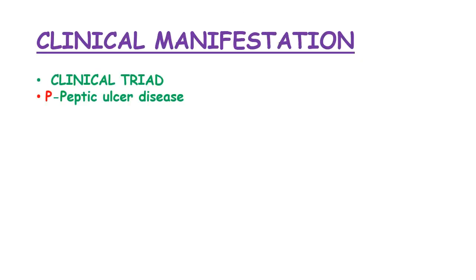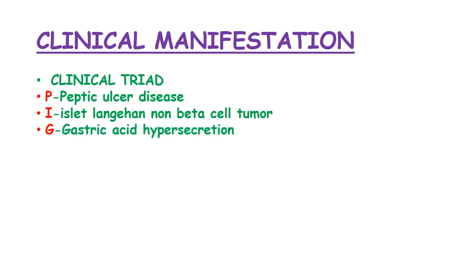The clinical manifestations include peptic ulcer disease, islet non-beta cell tumor (gastrinoma), and gastric acid hypersecretion. These three constitute the clinical triad for Zollinger-Ellison syndrome.